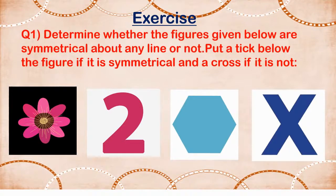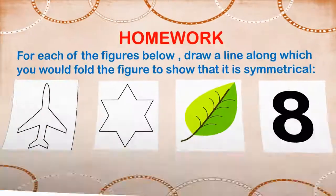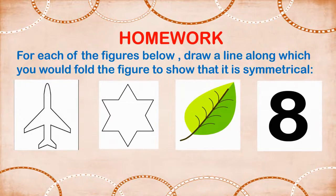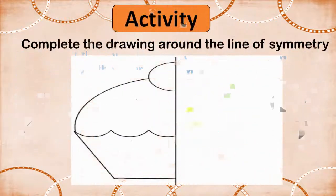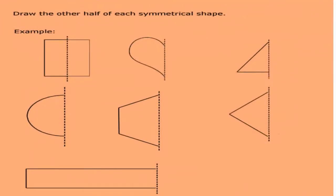Children, now it's time for the exercise. You will be doing this exercise in your maths notebook. Question 1: Determine whether the figures given below are symmetrical about any line or not. Put a tick below the figure if it is symmetrical and a cross if it is not. Now it's time for the homework: for each of the figures below, draw a line along which you would fold the figure to show that it is symmetrical. Now for the activity: draw the other half of each symmetrical shape. One example is done for you.